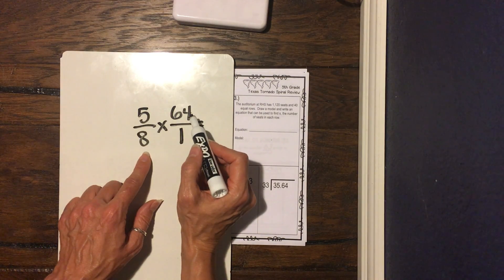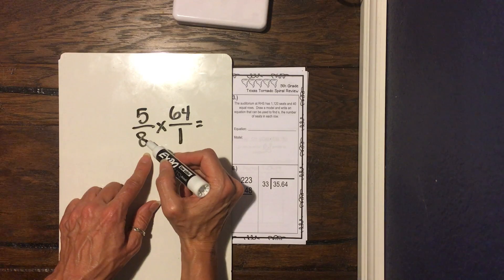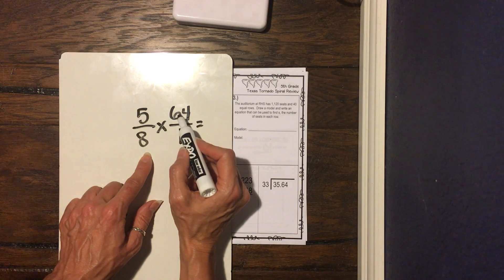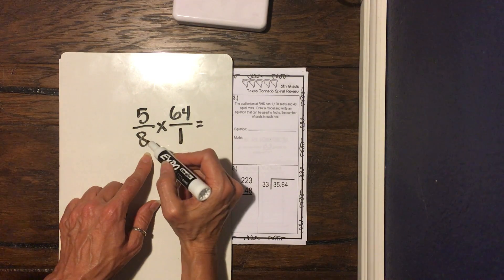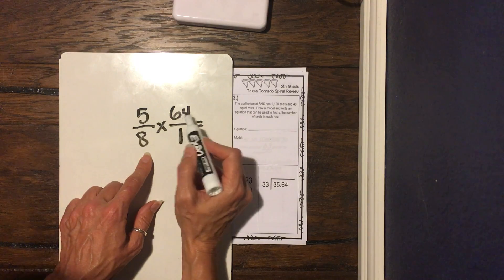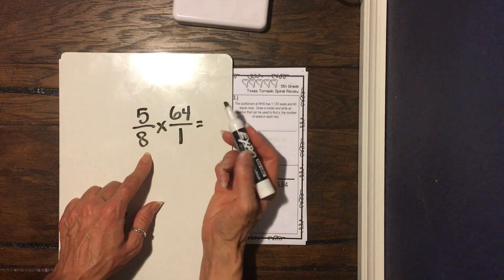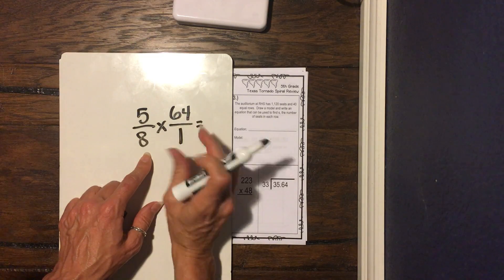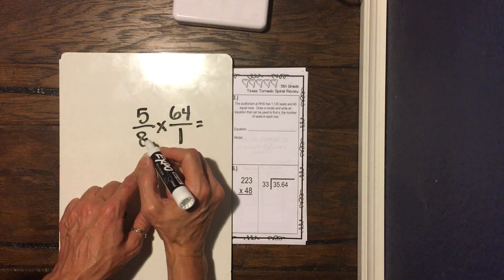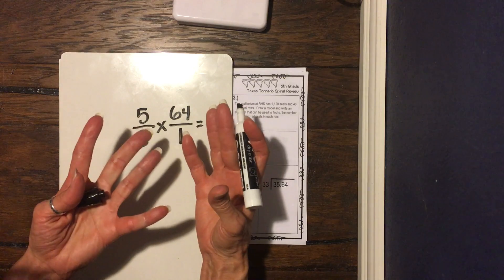Well, the five and the one are not gonna change, because one doesn't change anything. So we're looking at eight and 64, and we just ask ourselves, what factors do these two numbers have in common? Well, we know they have two in common, because they're both even. We know four goes into eight. Does four go into 64? Well, it does. Is there anything bigger that goes in? Well, does eight go into 64?